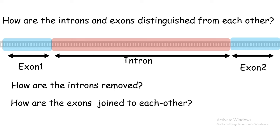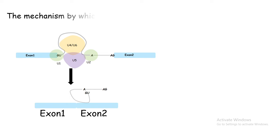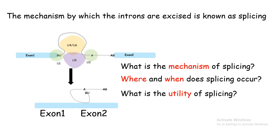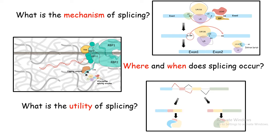The mechanism by which introns are excised out is known as splicing. In this video we are going to focus on three things: what is the mechanism of splicing, where and when does splicing occur, and what is the utility of splicing. This is a very brief bird's-eye view of this whole process. Later on we are going to talk about this mechanism in details.